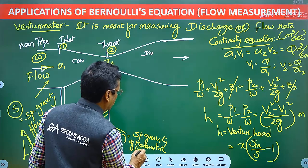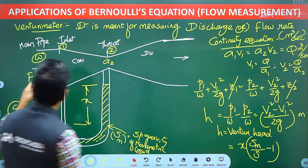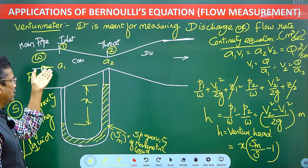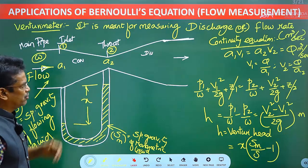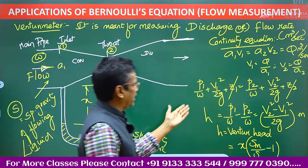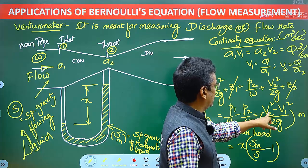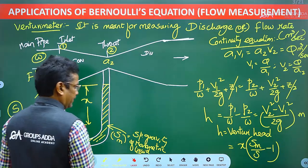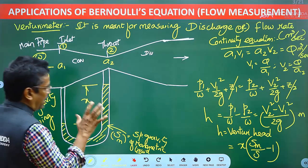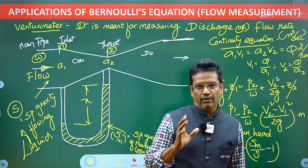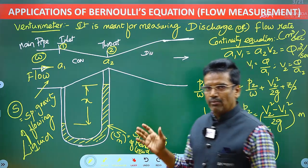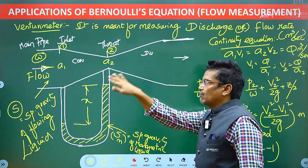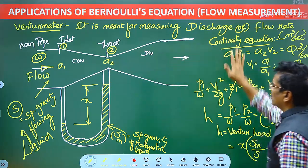SM is the specific gravity of the manometric liquid and S is the specific gravity of the flowing liquid — for example, water with mercury as the manometric liquid. The discharge or volume flow rate of the fluid can be obtained using the Venturi meter by applying two conservation principles: conservation of mass, which is the continuity equation, and conservation of energy, which is Bernoulli's equation.